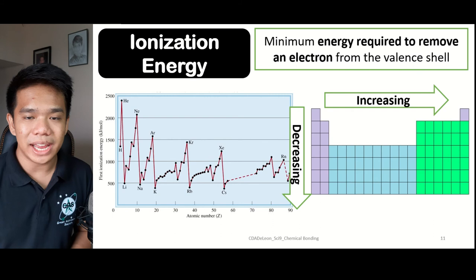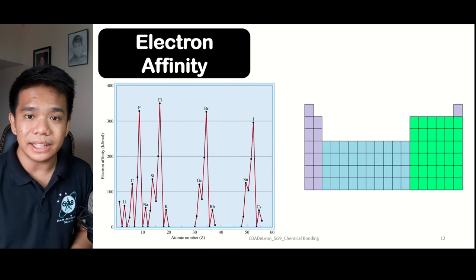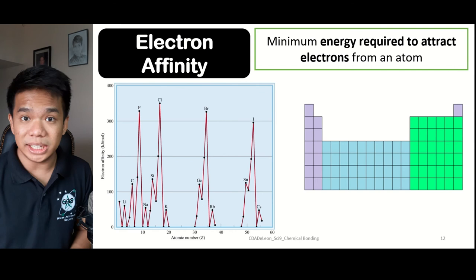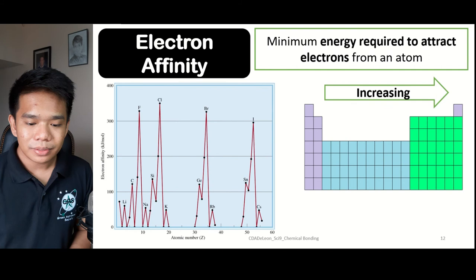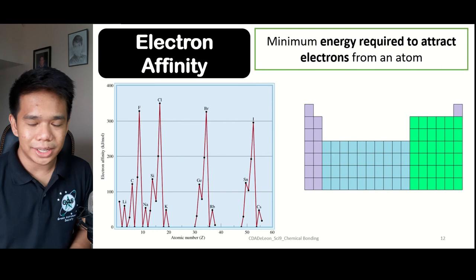Next we have electron affinity. This is somewhat related to ionization energy, but electron affinity refers to the minimum energy for electrons to be attracted by the atom. Electron affinity increases as we go from left to right, and it tends to decrease when we go from top to bottom.